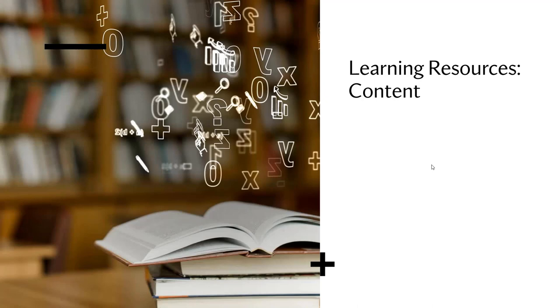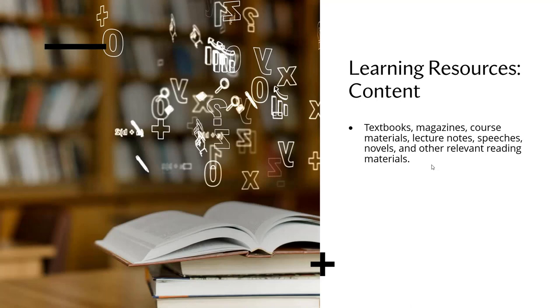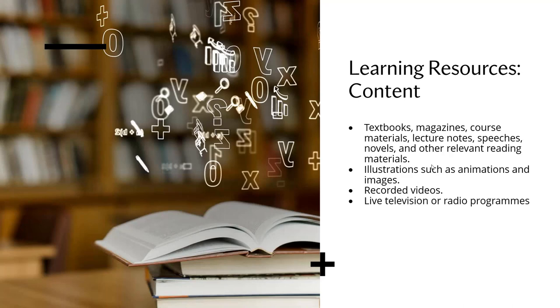Let us look at the different forms of learning resources. First, let's look at content. In the form of content, it could be magazines, textbooks, course materials, lecture speeches, and other printed reading materials. Content could also be in the form of illustrations, animations, and images.